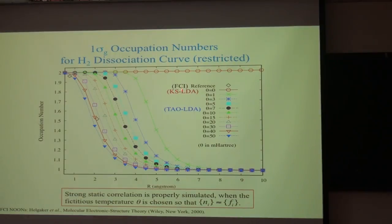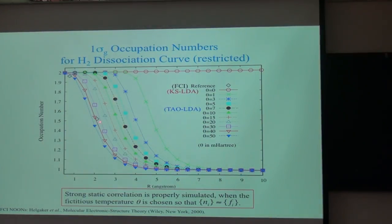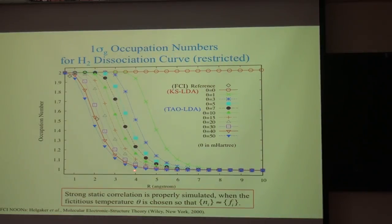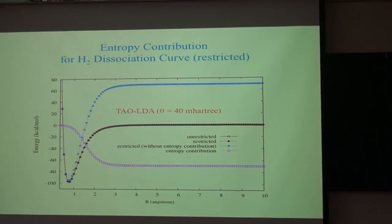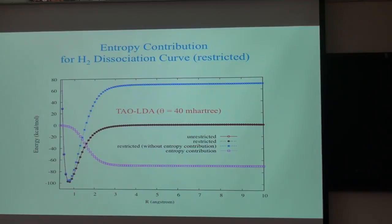The full C_dot gives the exact result and exact natural orbital occupation numbers. This data corresponds to the exact result, and when C_dot is between 30 and 50, the curve simulates the exact natural orbital occupation numbers. This also shows the entropy contribution for C_dot that describes the H2 dissociation property.